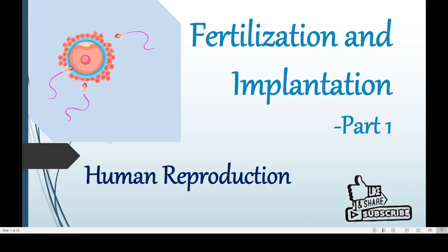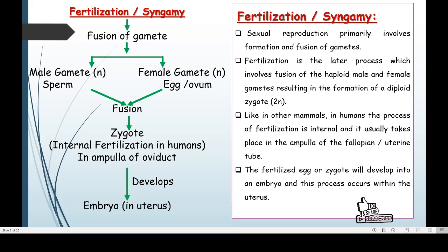In our last video we studied spermatogenesis and oogenesis. Now in this video we have to see fertilization and implantation. Fertilization is also called syngamy — it is the fusion of gametes. In males the gamete is sperm, and in females the gamete is egg or ovum. The fusion of sperm and ovum produces a zygote. In humans, fertilization is internal fertilization, taking place inside the body of the female.